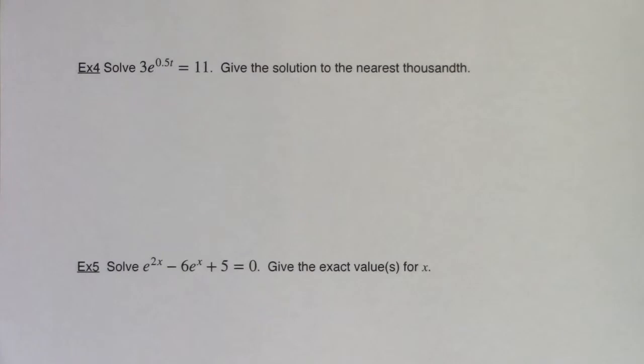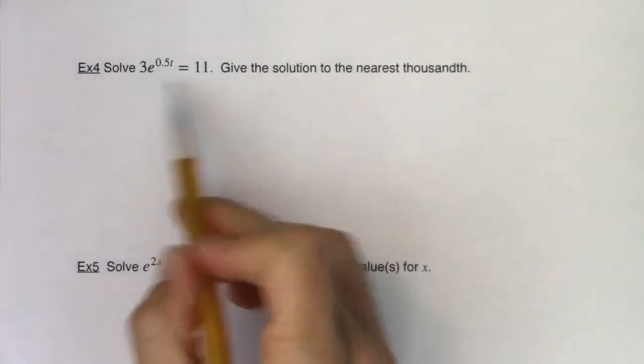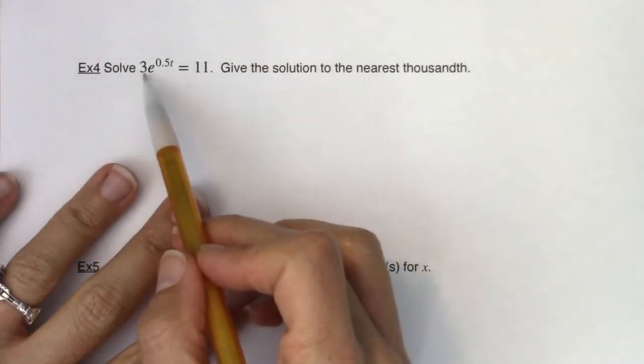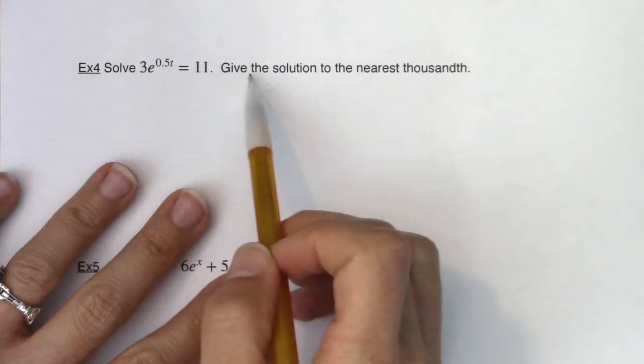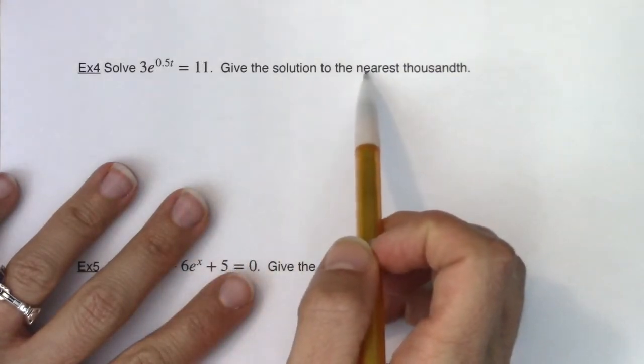Hey Math 31, here we are at example 4. Let's take a look at what we have here. It says solve this equation and give the solution to the nearest thousandth.